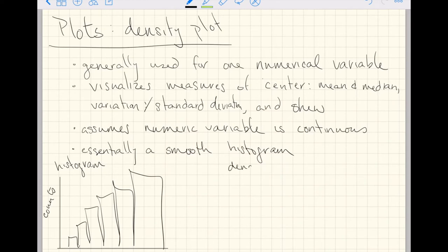The density plot representation of that histogram would look like this. We would still have whatever numeric variable is on the x-axis, our numeric continuous variable, and we would essentially just have a smooth representation of all of those data. It would theoretically be smooth because it could take on any of those values within whatever range we have for our data.